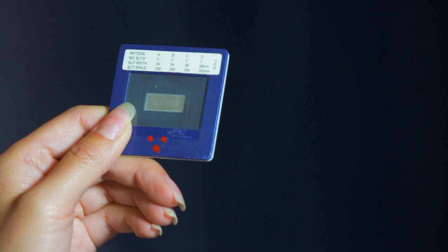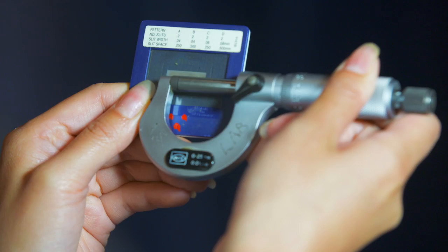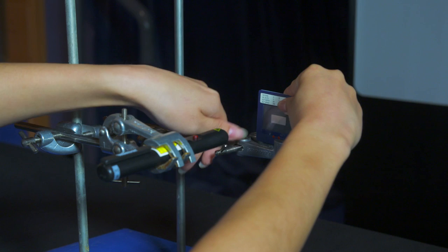Here, I have a double slit. These slits are separated by 0.25 millimetres or 2.5 times 10 to the minus 4 metres. The light passes through either slit and recombines on the other side, creating a fringe pattern.